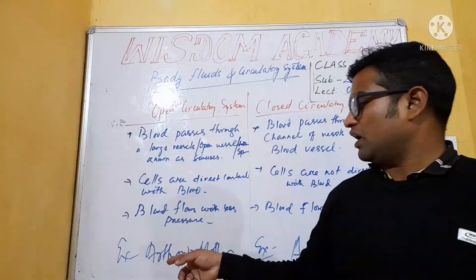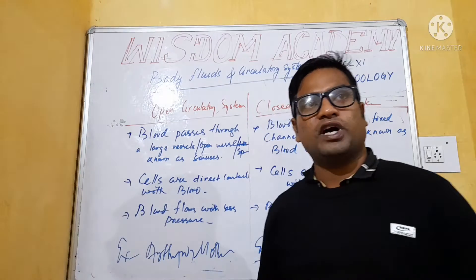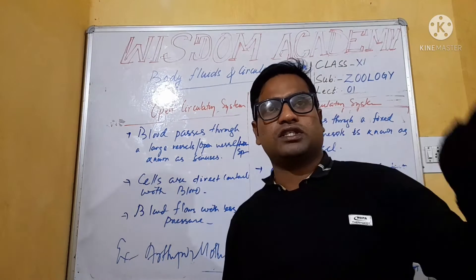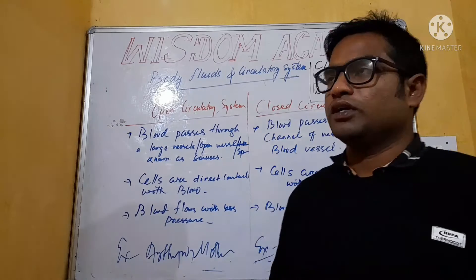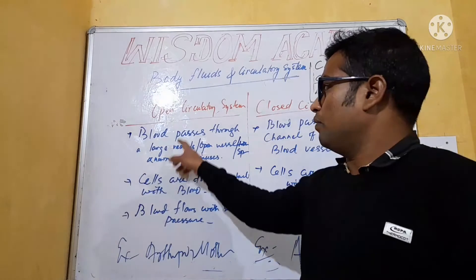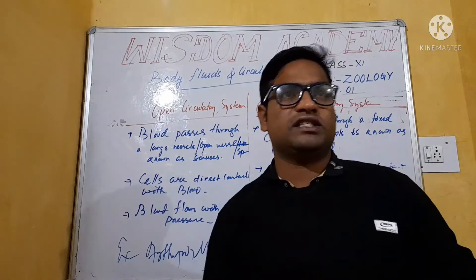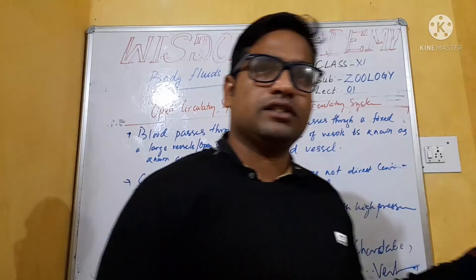Some organisms like arthropods and molluscs use an open circulatory system, whereas annelids, chordates, and vertebrates perform a closed circulatory system.